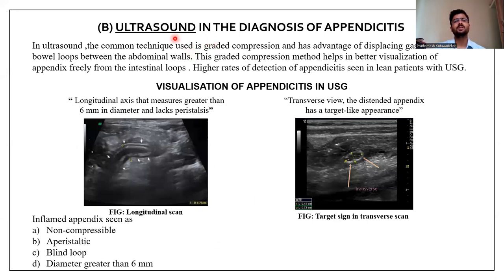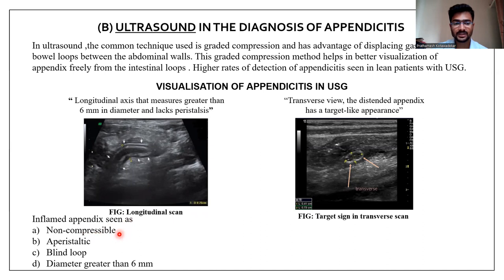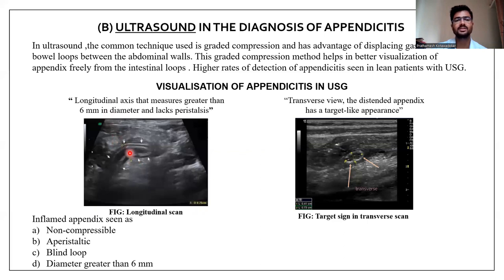On USG, the graded compression technique is used, which has the advantage of displacing gas-filled bowel loops between the abdominal wall, aiding in better visualization of the appendix free from intestinal loops. Higher rates of detection are also found in lean patients. The inflamed appendix is seen as a non-compressible, non-peristaltic blind loop with a diameter greater than 6 mm. Images showing the appendix in longitudinal axis demonstrate diameter greater than 6 mm, while in transverse view a target-like appearance is seen.